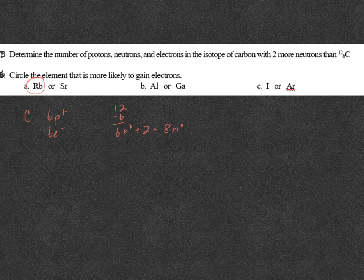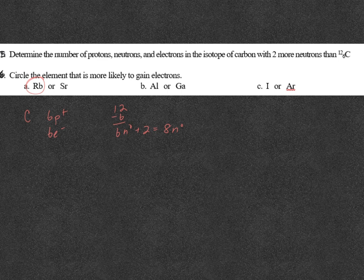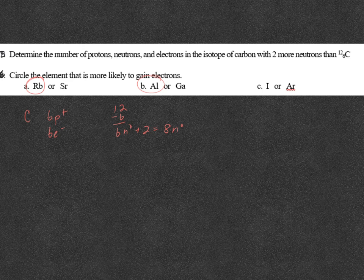Now, B, aluminum and gallium. Aluminum is above gallium on the periodic table, which means it's smaller. So if it's smaller, those outermost electrons can get closer to the nucleus and feel the pull of the nucleus. So therefore, aluminum, it's going to be easier for aluminum to gain electrons.